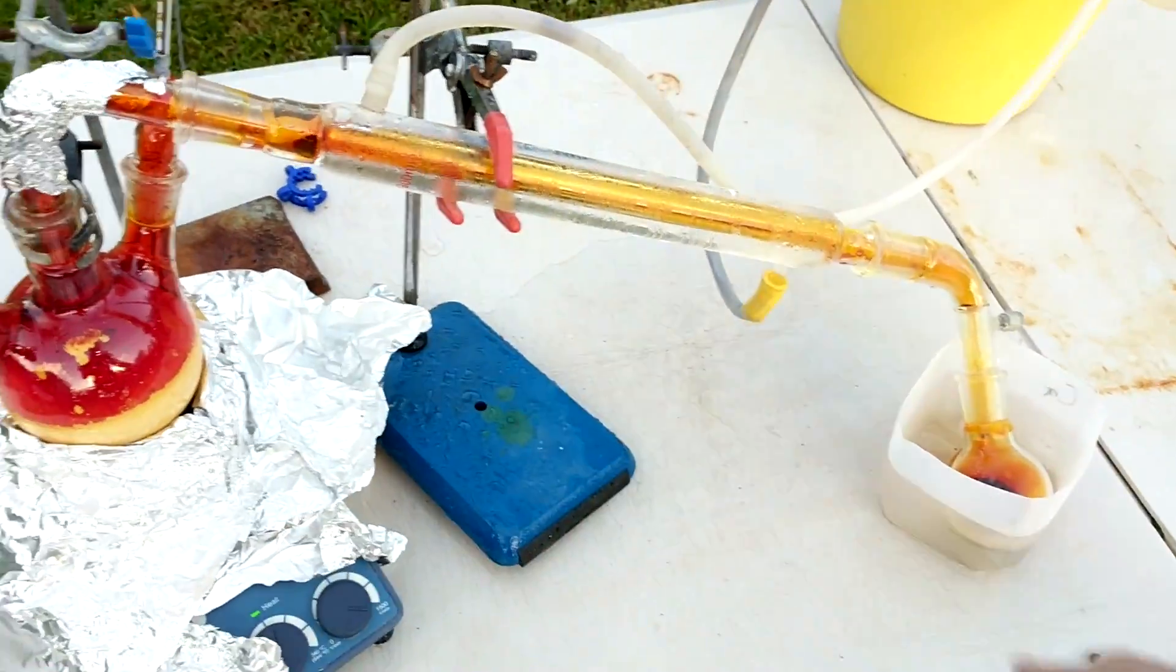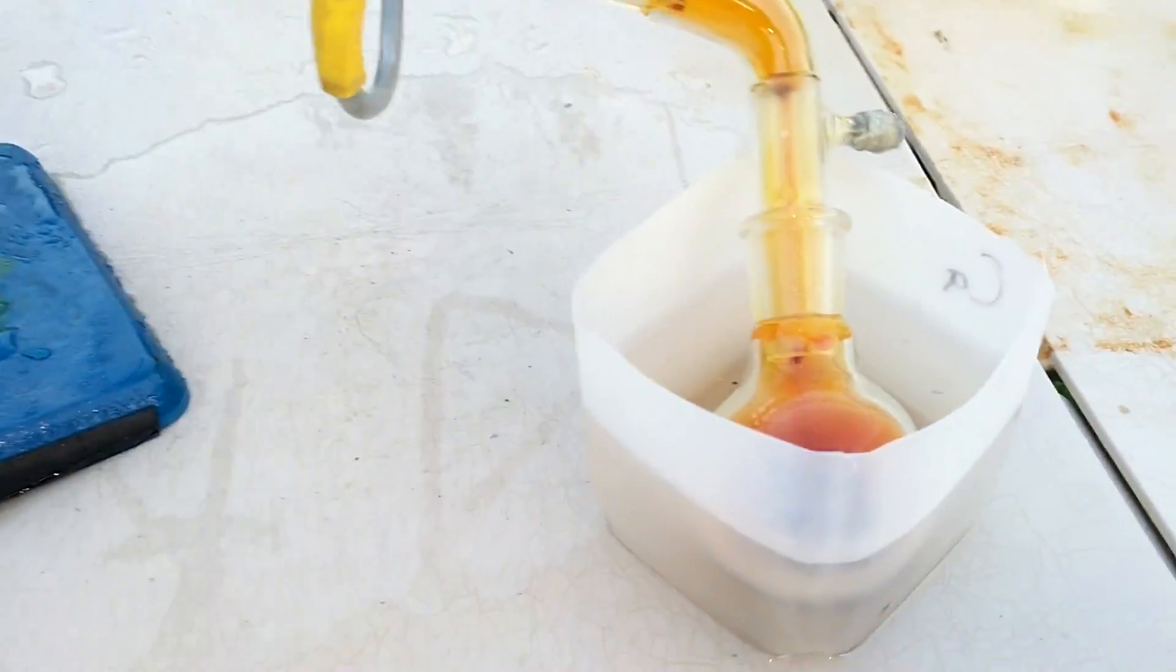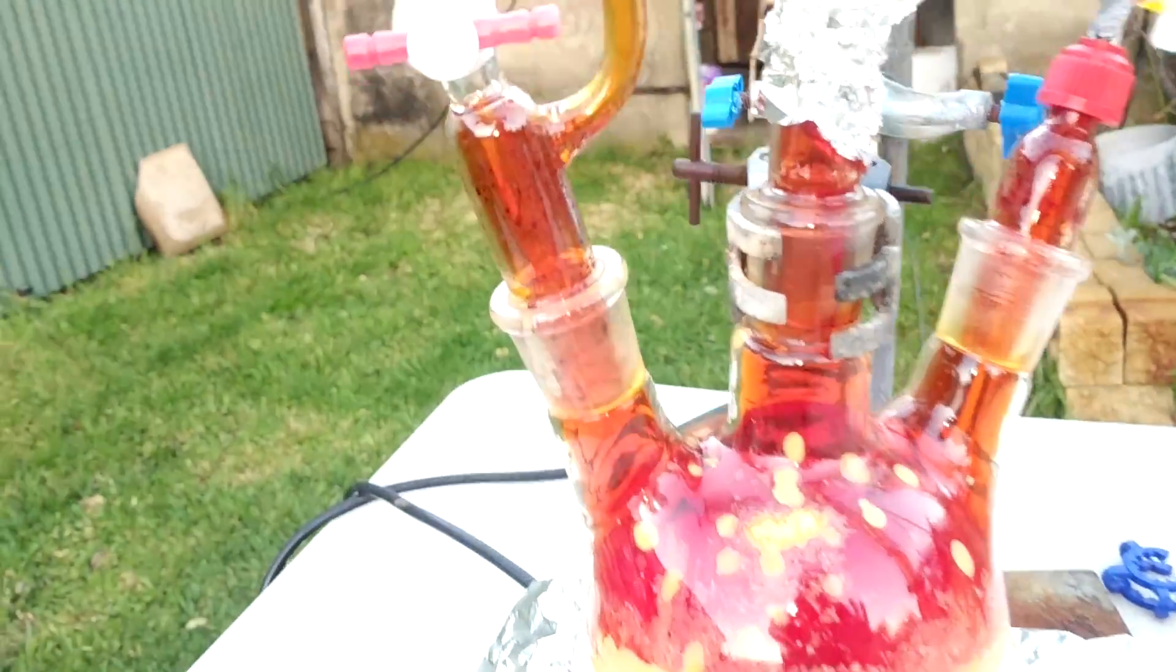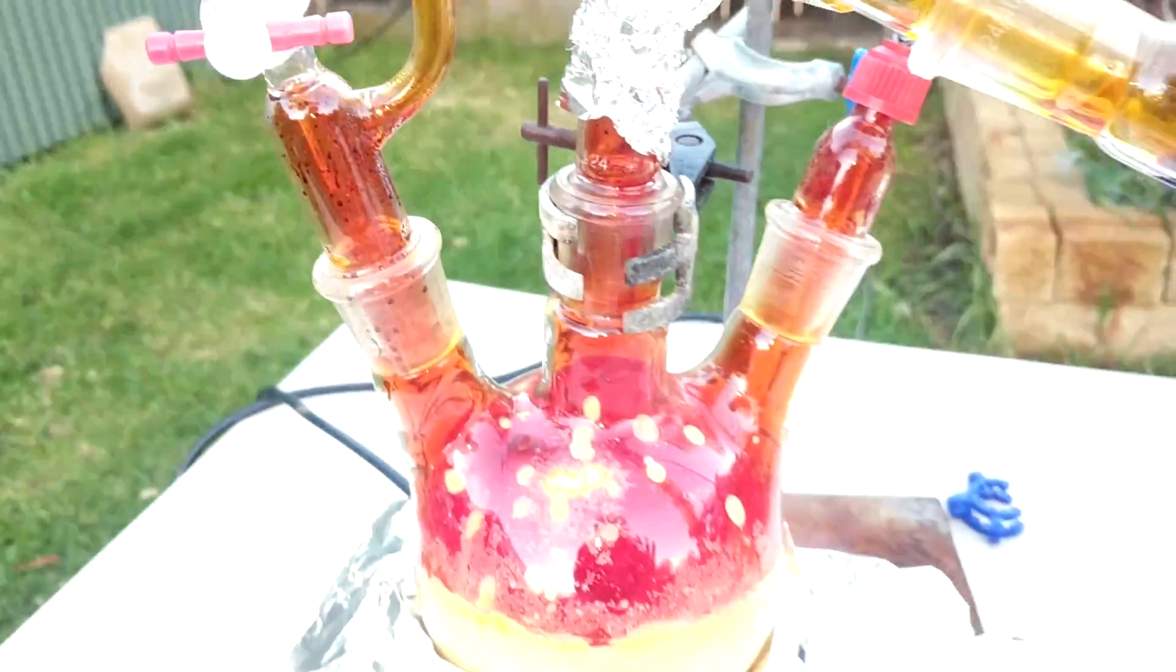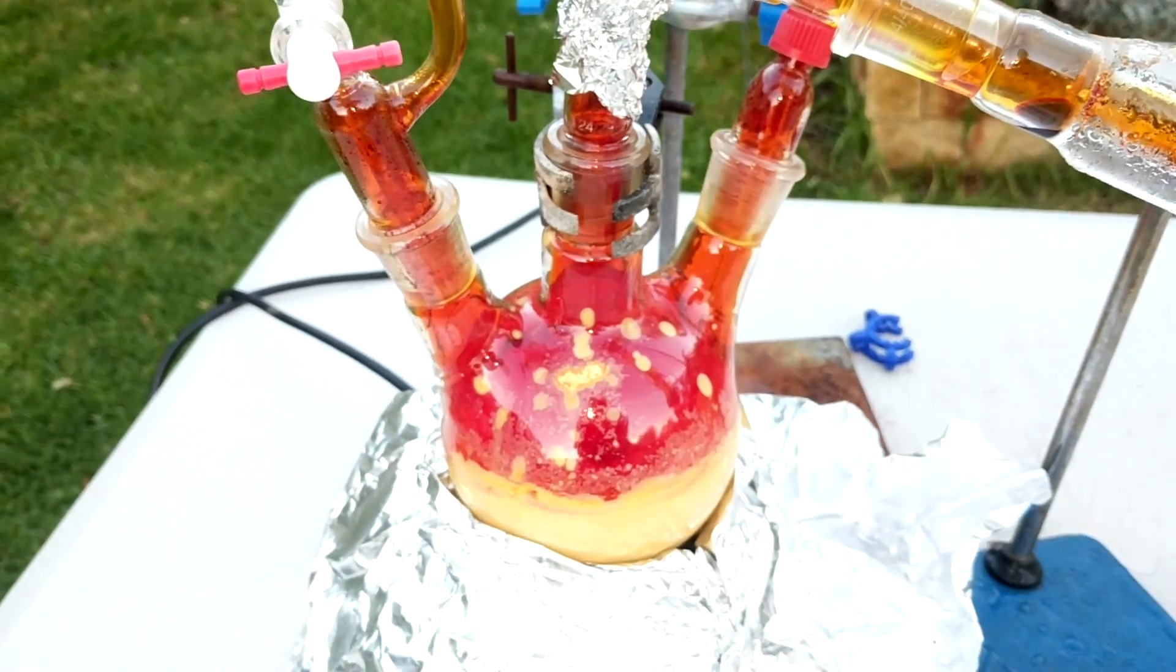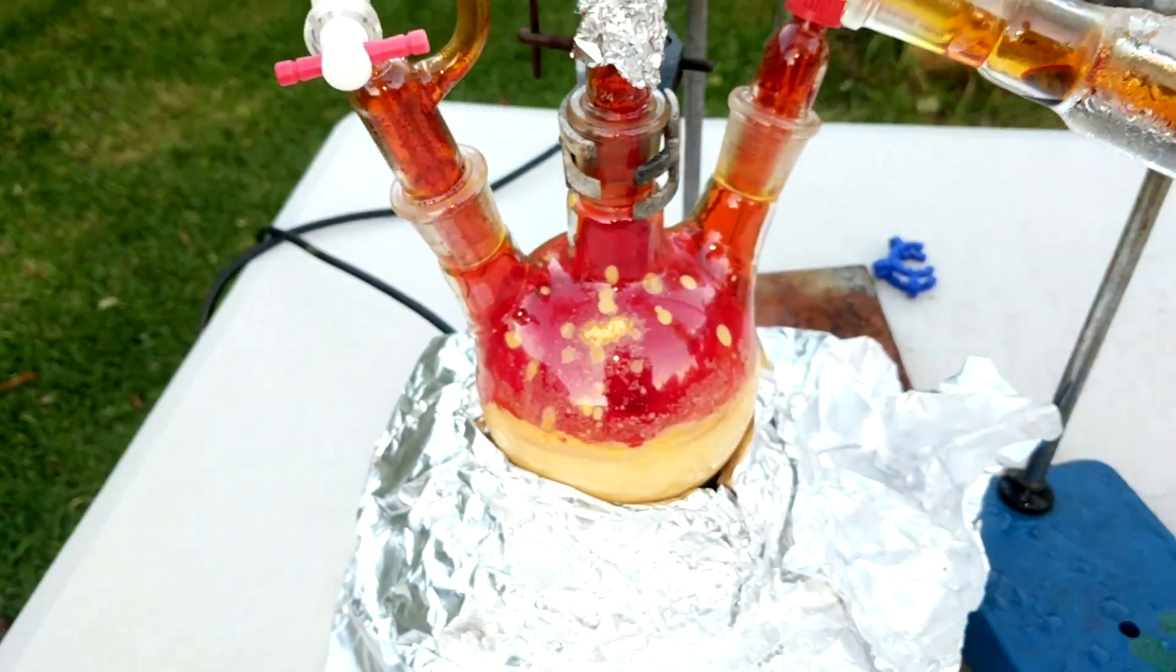So much liquid bromine. All the metabisulfite has now been added. We have quite a decent yield of bromine, but as we can see, there's still a lot of bromine in the flask there. Look at it go. So we're going to raise the temperature a little bit. It's been sitting at about 85 odd, 80 to 85 for most of that addition. Now we're going to raise it to about 95.